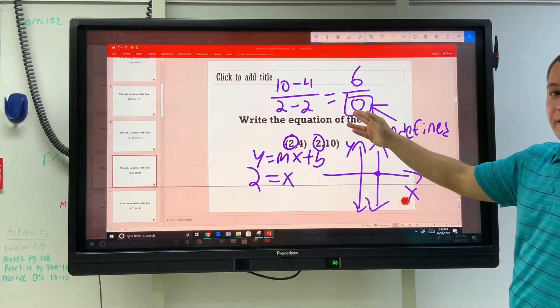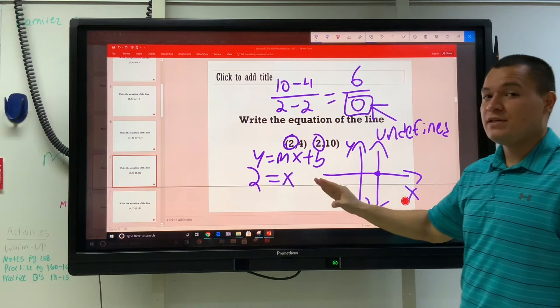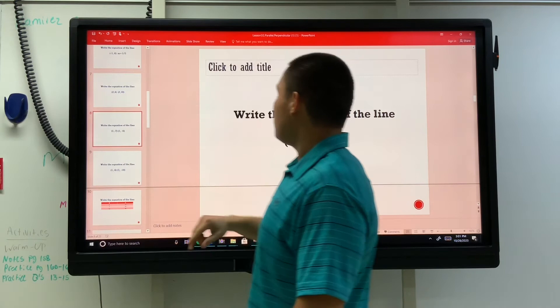So find the slope. If you're given two points, find the slope. If you get something weird, graph that something that's weird and then see what you need to do. What does that actually mean?